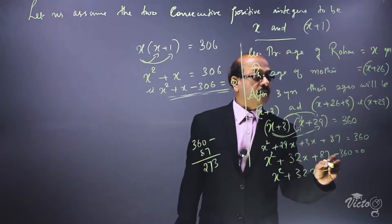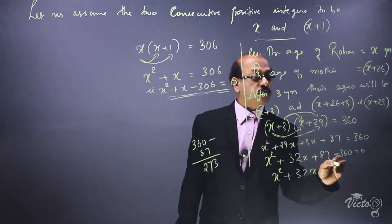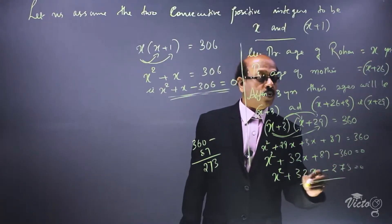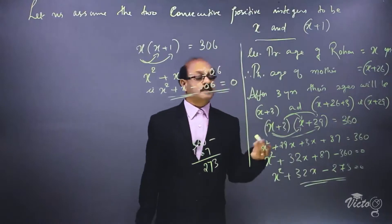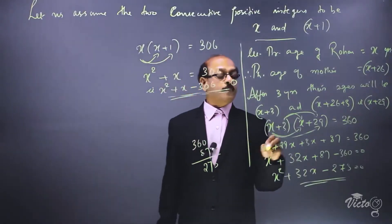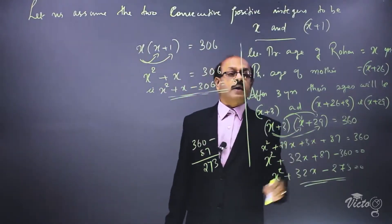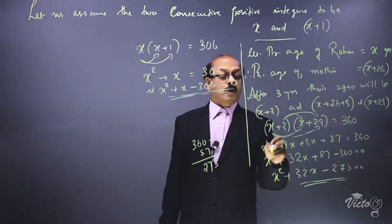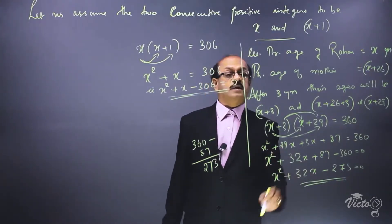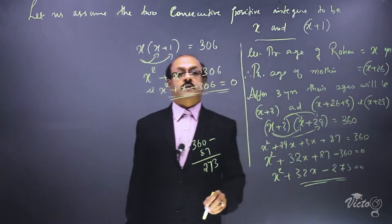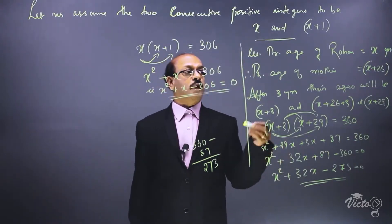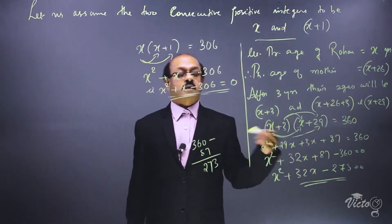The required equation is x square plus 32x minus 273 is equal to 0. The value of a is 1, b is plus 32, and c is equal to minus 273. We will solve this equation and find out the age of Rohan in the next topic.